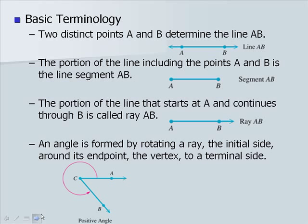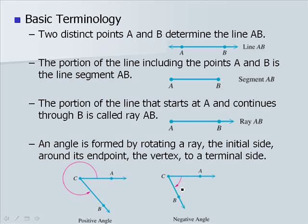Here's an example of a positive angle created by rotating ray CA, the initial side, around its vertex C, to the terminal side, which gives us ray CB. Here's an example of a negative angle — we've rotated the other way.